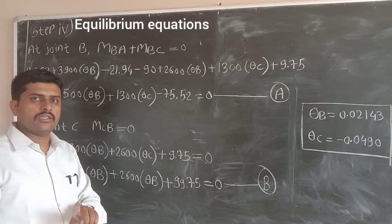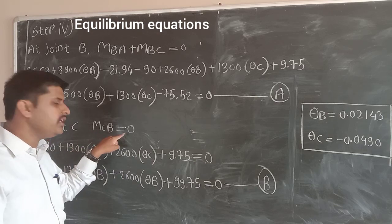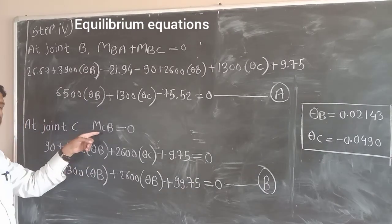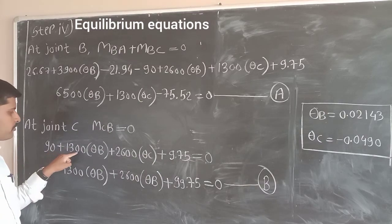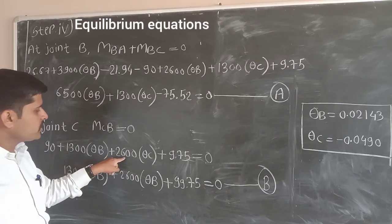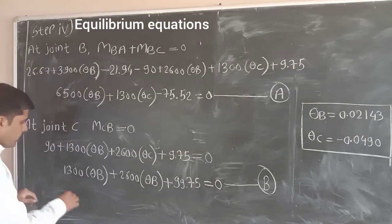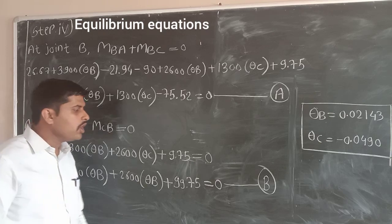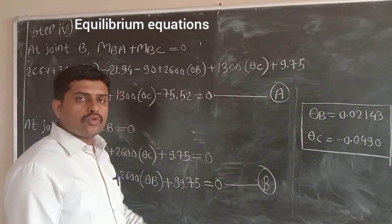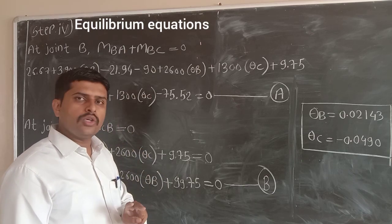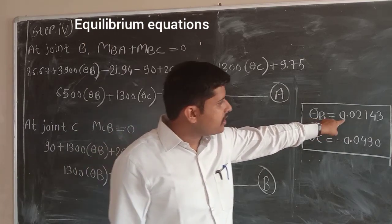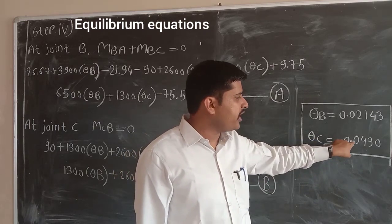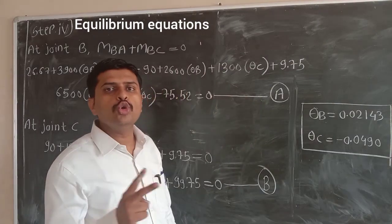At joint C, the sum of moments starting from C equals zero. We have only one moment starting from support C, that is M_CB = 0. Putting in the value of equation 4: 90 + 1300*theta_B + 2600*theta_C + 9.75 = 0, which is equation B. With two unknowns and two equations, solving gives: theta_B = 0.02143 and theta_C = minus 0.0490.